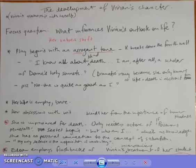Hello, we're going to talk about the development of Vivian's character in this tutorial. One of the major components of drama is the ability for us as an audience to watch the progression of a character from one state to another. We're going to use this focus question: what influences Vivian's outlook on life? We see her values shift, and we're just going to trace that and draw some observations at the end.